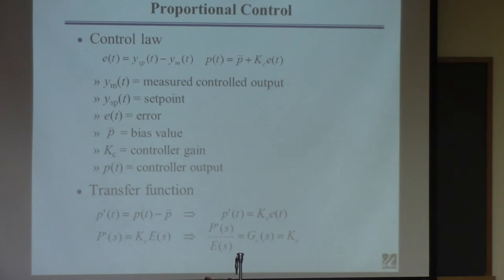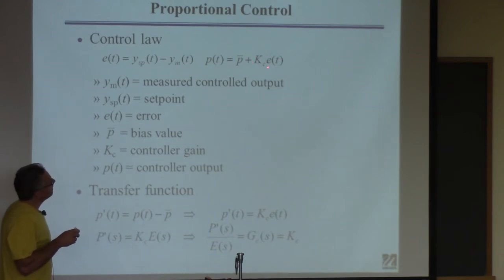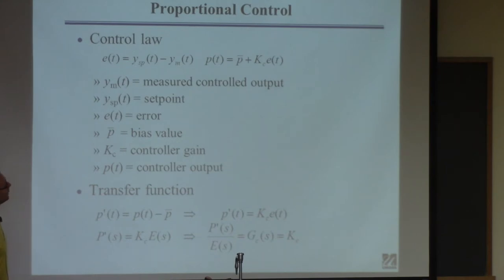The good thing about proportional control is it acts quickly. The bad thing is it doesn't act completely. There's no guarantee from the proportional equation that the output P will drive the error to zero. To best explain why, let me show you how integral control works — then we can understand why without it, proportional control alone won't eliminate the error.